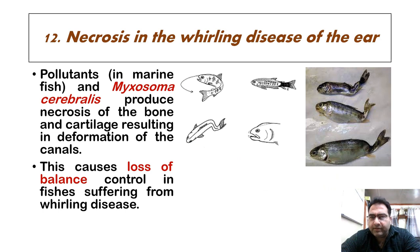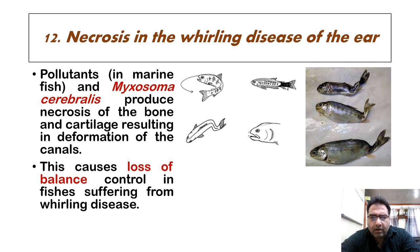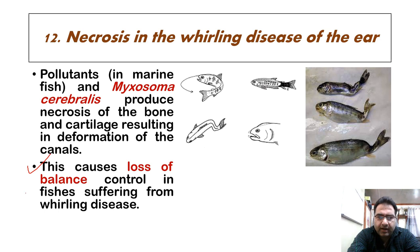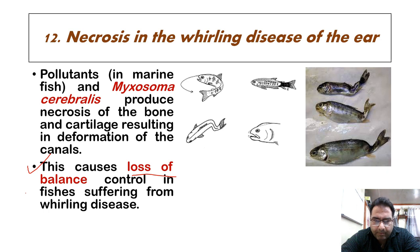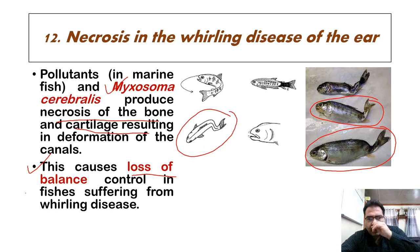Then there is necrosis in the whirling disease of the ear. In whirling disease, the fish swims abnormally in a whirl-like fashion, and it is mostly caused by the pathogen Myxosoma cerebralis. There is also deformation of bones. The pathogen causes loss of balance and control in fishes, which then swim in an abnormal manner. Myxosoma cerebralis produces necrosis of bone and cartilage, resulting in deformation of the canals, as is clearly visible in the picture.